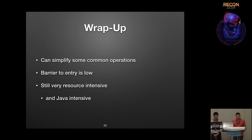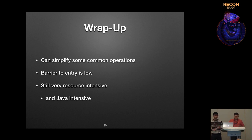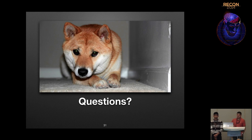To wrap it up: graph databases can be used for lots of fun stuff in reversing. The barrier to entry is pretty low — you can run Neo4j on your laptop, and I've had Neo4j and Joern running on my MacBook. But once you start scaling up, you have to move to a server. I have a Titan server running on a machine with 72 gigabytes of RAM, and I still hit performance problems because there are a lot of gotchas. It can be resource intensive and Java intensive. We'll take any questions.